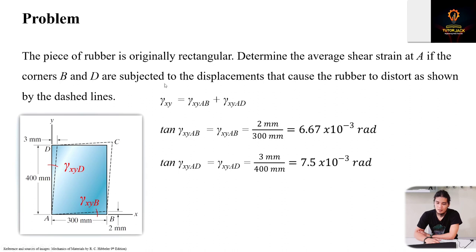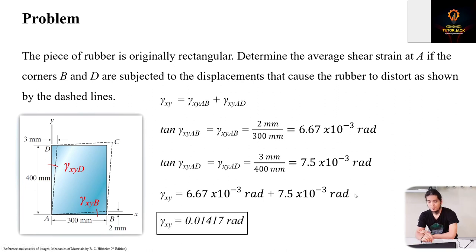And then using our original equation, we can get gamma XY at point A as the sum of 6.67 times 10 to the negative 3 and 7.5 times 10 to the negative 3, which equals 0.01417 radians. So that's the average shear strain at point A, considering the movement represented by the dashed lines.